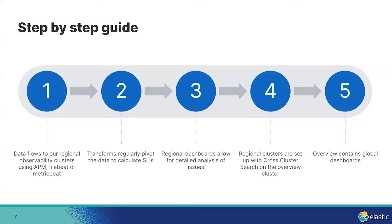I knew we needed to break this down into smaller pieces. First, we needed to make the process of getting the data into our platform as easy as possible. Second, we needed to roll up summarized data so that we could look at larger time periods without impacting how much data we were looking at. And third, we needed to be able to visualize it. We instrument the code itself and then ingest the data using either custom APM metrics libraries, Filebeat, or Metricbeat into our regional deployments. There, we're using transforms. Transforms enable you to convert existing Elasticsearch indices into summarized indices, which provide opportunities for new insights and analytics. We're using them to pivot the data to calculate service level indicators and store them in a separate summarized index.